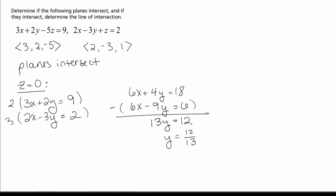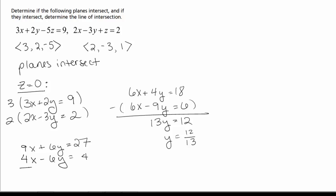And then we can find X by plugging back in. Taking the original equations, multiplying the top one by 3 and the bottom one by 2, we get 9X + 6Y = 27 and 4X − 6Y = 4. Adding these gives 13X = 31, so X = 31/13. And that gives us a point on our line of intersection: X = 31/13, Y = 12/13, Z = 0.